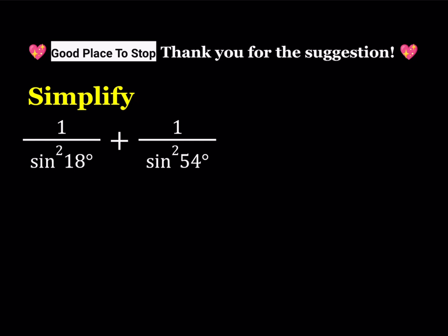We are supposed to simplify 1 over sine squared 18 degrees plus 1 over sine squared 54 degrees. The original problem is in radians, but I prefer to work in degrees. From this point on I'm not going to be using the degree symbol, but degrees are understood. So we are going to simplify this expression, and to do so I'm going to do the following.